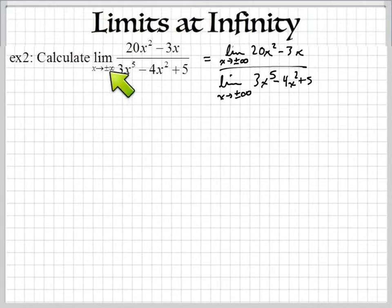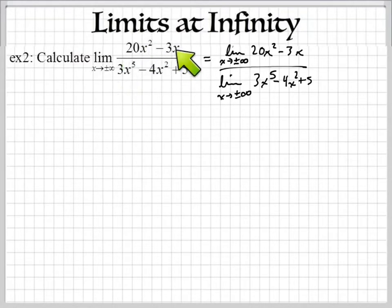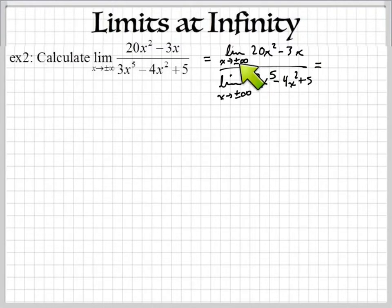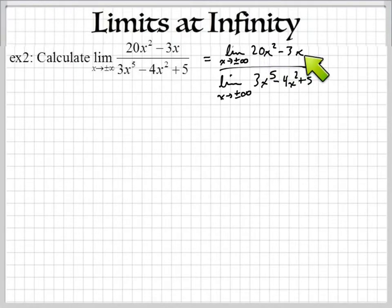Some of you may notice there's a positive and negative infinity here. That means you're going to find the limit going to the left and going to the right. In this case it doesn't matter because they both approach the same limit. Let's find the limit of the top. As x is increasing positively, 20x² and 3x are both going to get bigger and bigger and bigger. So the numerator is going to keep getting bigger and bigger — that means the top approaches infinity.